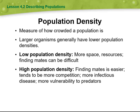Low population density means more space and more resources, but finding mates can be difficult. High population density means finding mates is easier, but there tends to be more competition, more infectious diseases, and more vulnerability to predators.